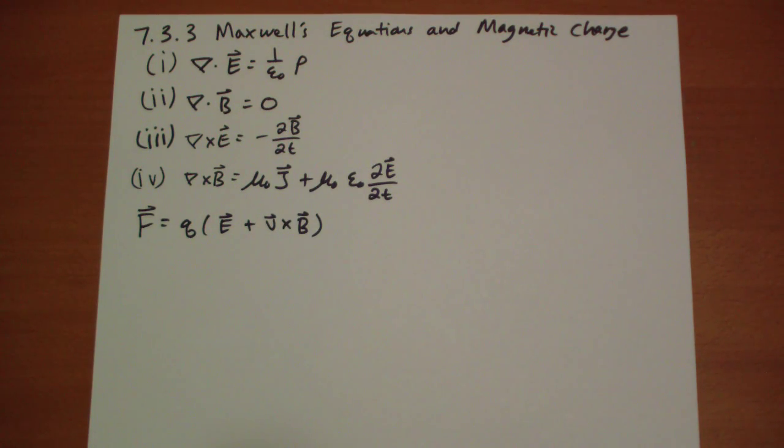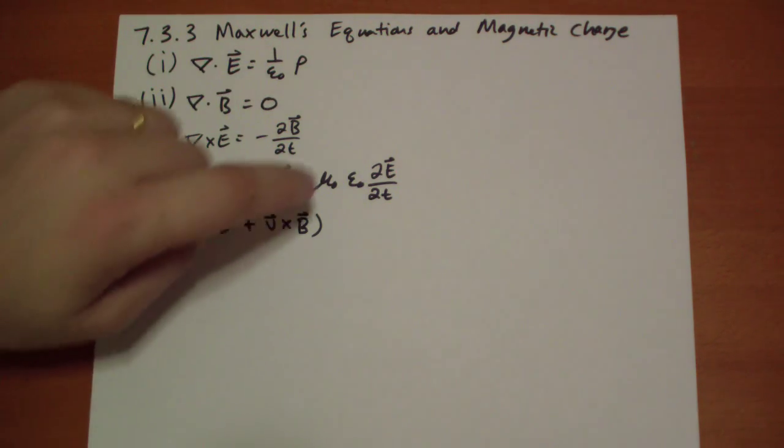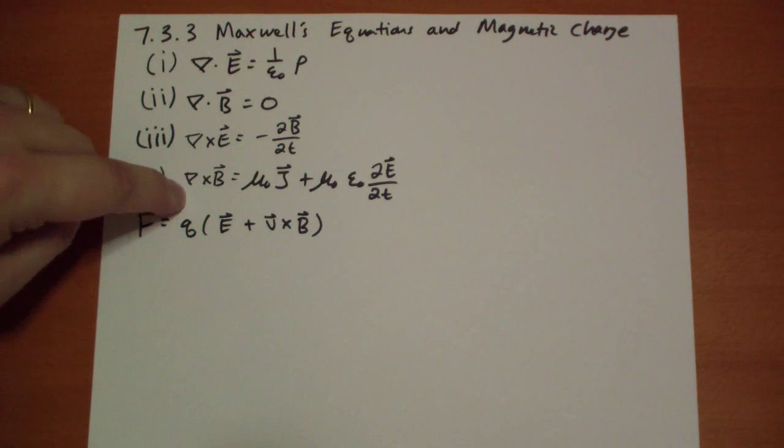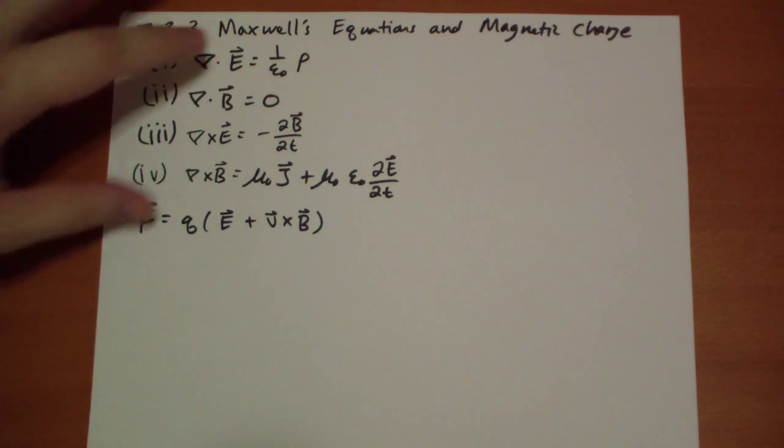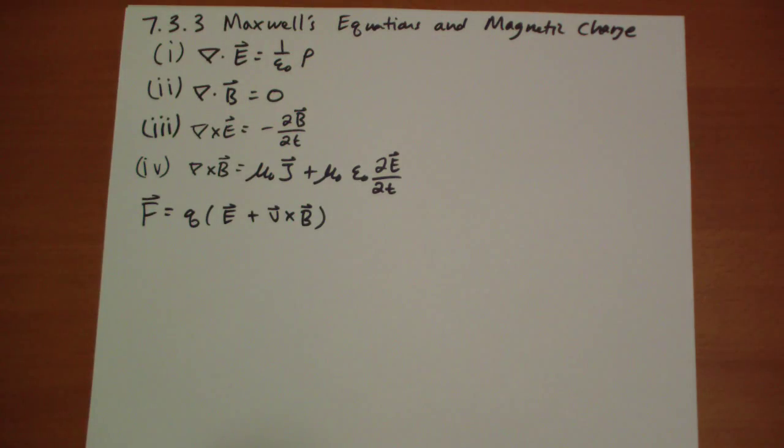Section 7.3.3. So this is what Maxwell's equations with the correction to Ampere's law looks like. This is differential form, of course you can probably easily translate these to integral form.